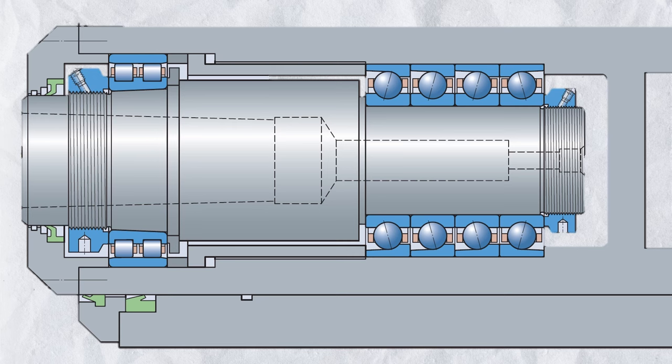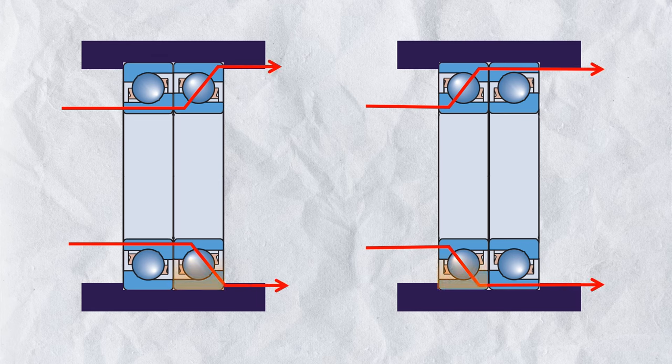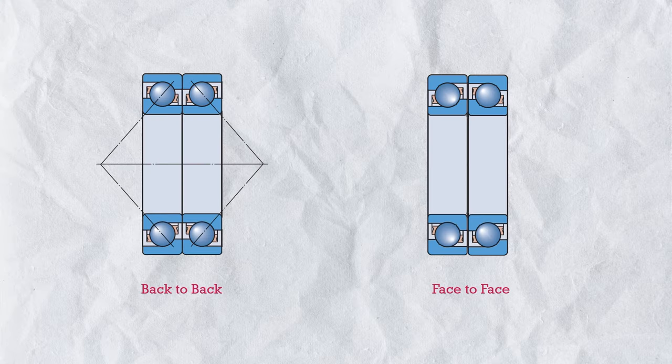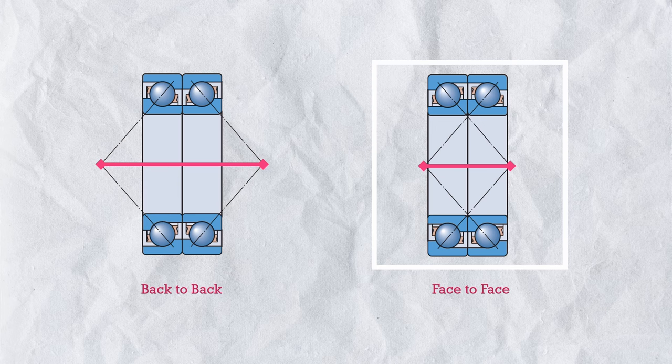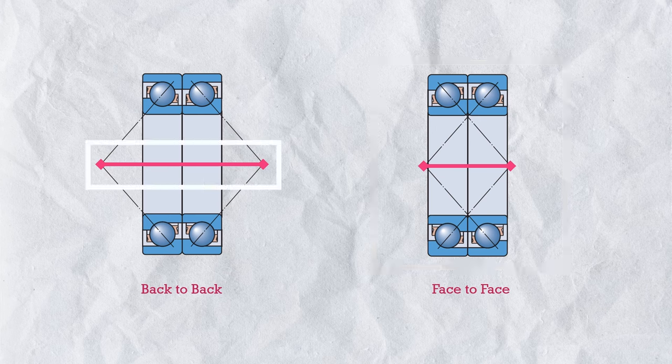You may ask: in both face-to-face and back-to-back arrangements, only one bearing works at a time against axial load in a given direction — so what is the difference, and why should we care about selecting the right arrangement? The main difference is this: when you extend the load lines in both arrangements, in back-to-back arrangement the lines diverge and intersect at a wide span, compared to face-to-face arrangement where the load lines converge and intersect at a narrow span. This wide span between the effective center marks makes back-to-back arrangement overall more rigid — more stiff — meaning less deflection under loading.